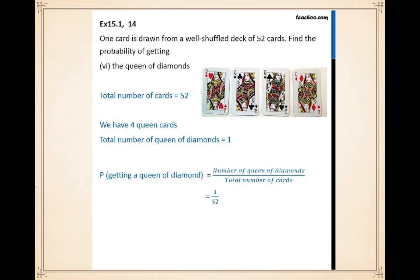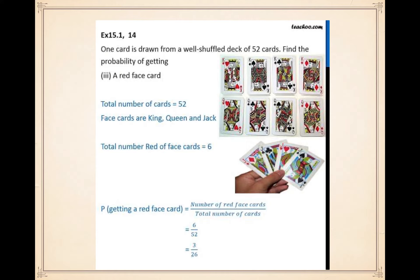Next question: find the probability of getting a red face card from a well-shuffled deck of 52 cards. Face cards are king, queen, and jack — and there are six red face cards in total. So we write six over 52, which simplifies to three over 26. That's our probability as a fraction.